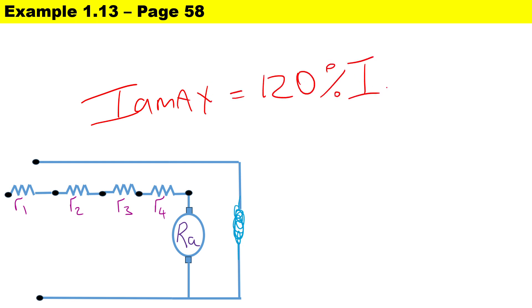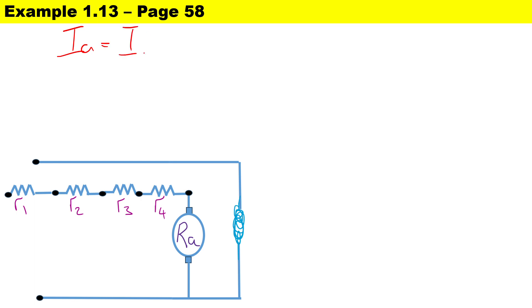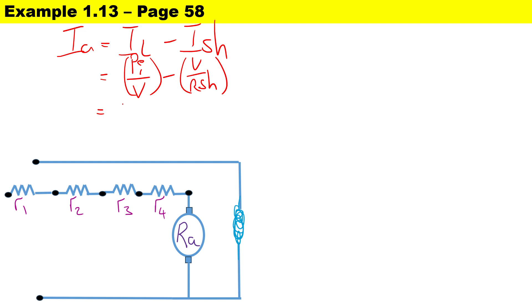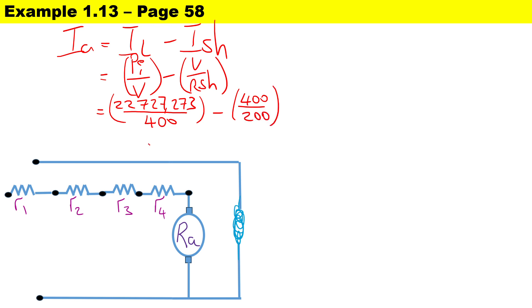Now we calculate the armature current. For a shunt motor, Ia equals IL minus I_shunt. Since it's a DC circuit we use the input power. To calculate I_shunt it is V over R_shunt. Substituting: input power of 22,727.27 watts divided by the terminal voltage of 400 volts, and I_shunt equals 400 over 200 ohms. We end up with an armature current of 54.818 amperes.